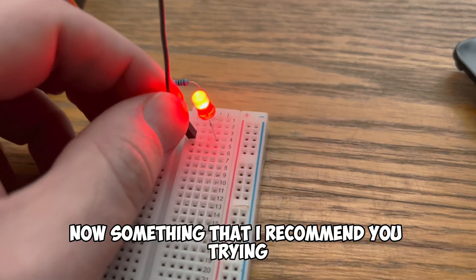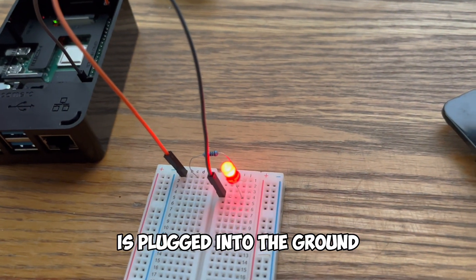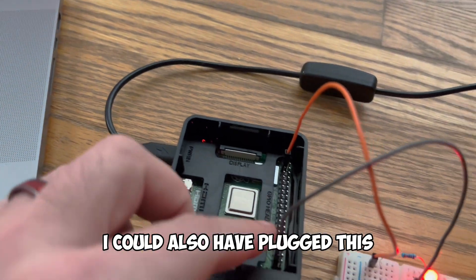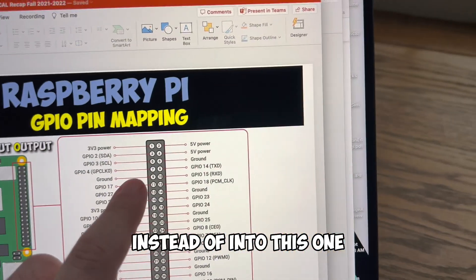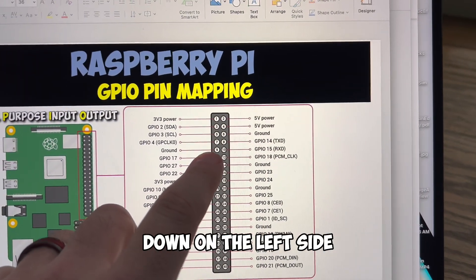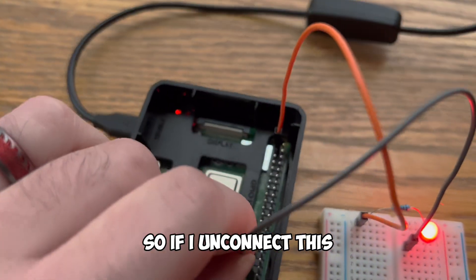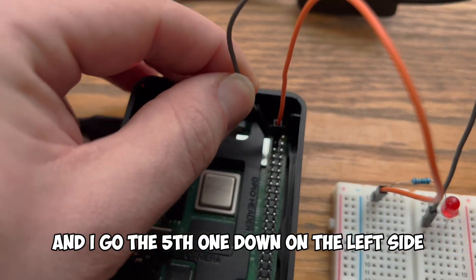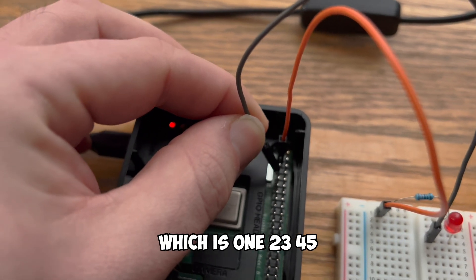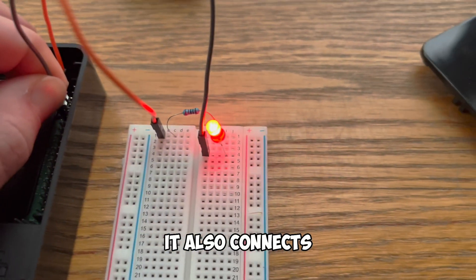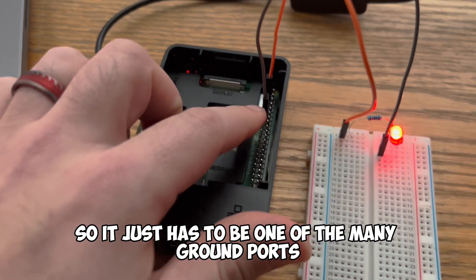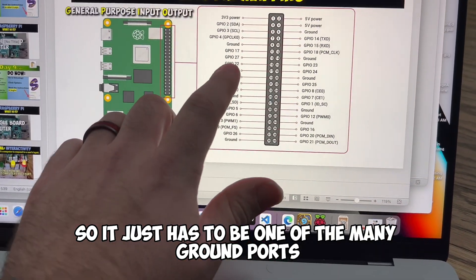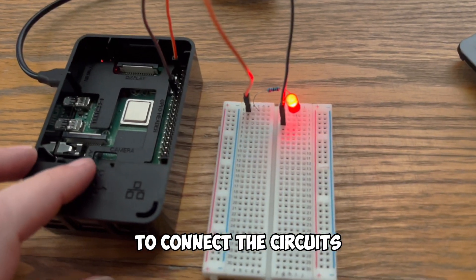Now something that I recommend you trying. This cable again is plugged into the ground. I could also have plugged this instead of into this one. I could have looked at the fifth one down on the left side. So if I unconnect this and I go the fifth one down on the left side which is one two three four five it also connects. So it just has to be one of the many ground ports to connect the circuits.